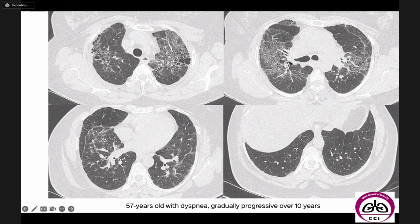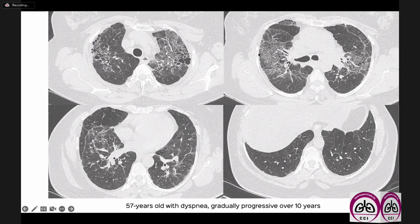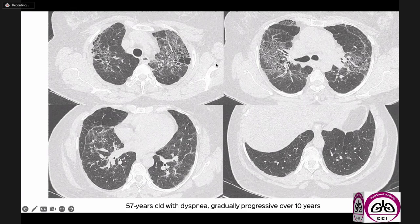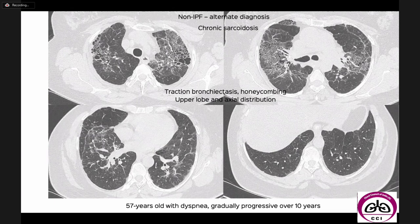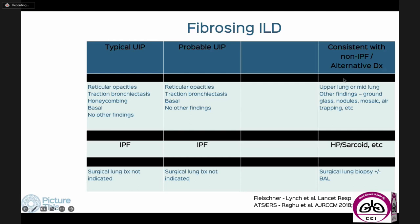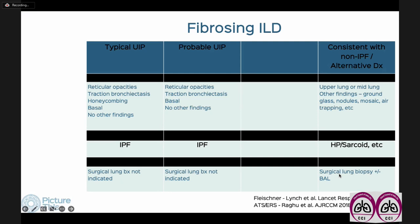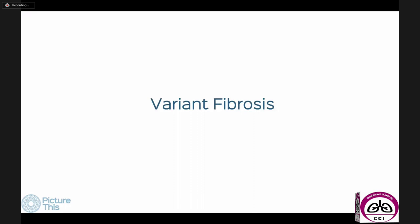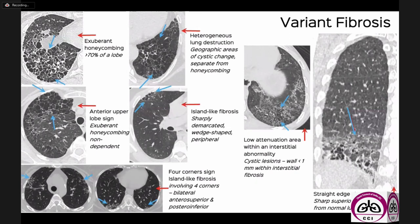This is non-IPF fibrotic hypersensitivity pneumonitis. On the other hand, this patient has an axial distribution with honeycombing in the upper lobes — non-dependent and extensive traction bronchiectasis but upper and mid-zone predominant, not subpleural basal — with additional findings. This is again non-IPF, and this pattern is very typical of chronic pulmonary sarcoidosis. In some instances a lung biopsy may be needed, but most of the time when we properly identify all these patterns, a biopsy isn't always necessary.